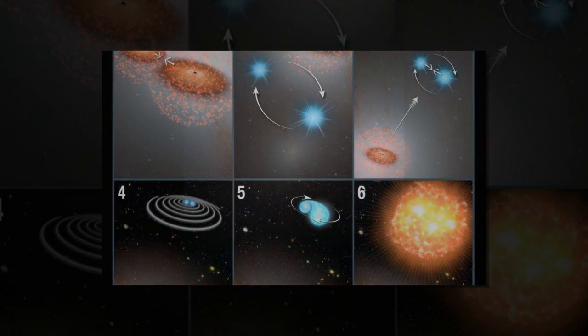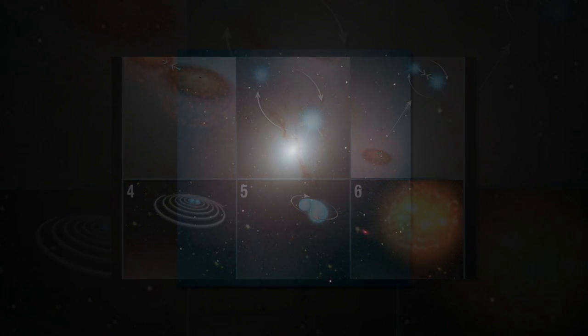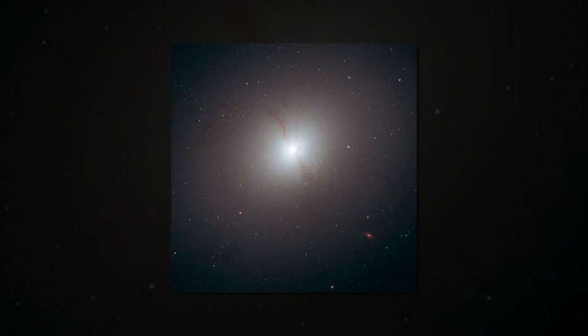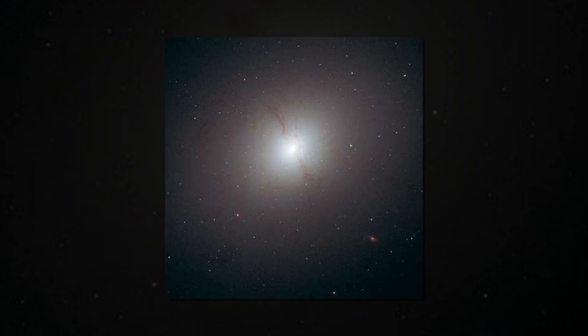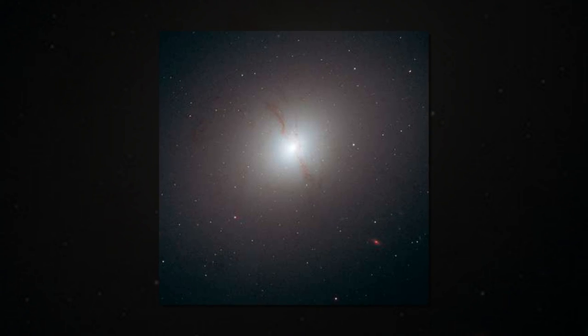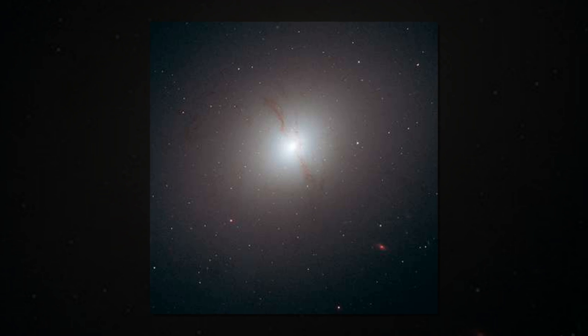To understand how the supernovas got so far from their galaxies, up to half a million light years away, moving at such high speeds, he looked at the galaxies that had produced the stars before ejecting them.